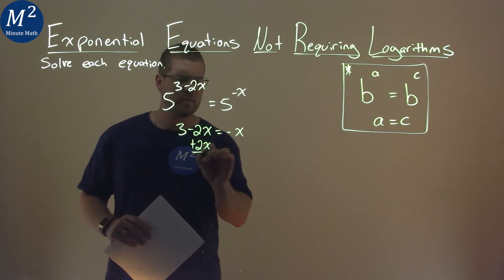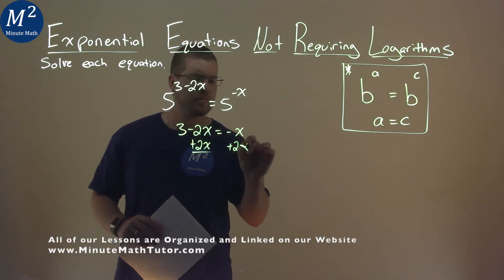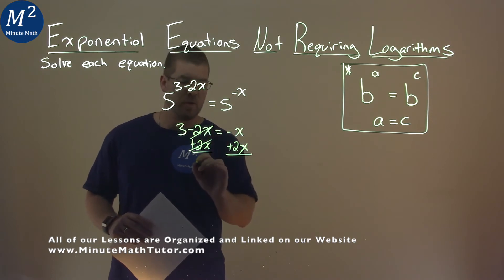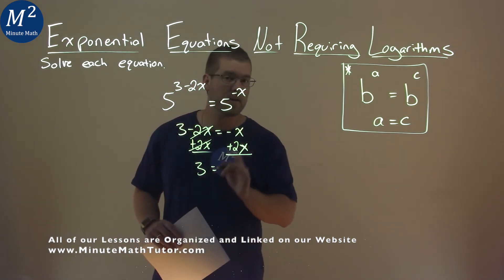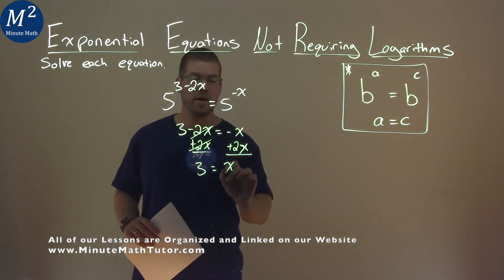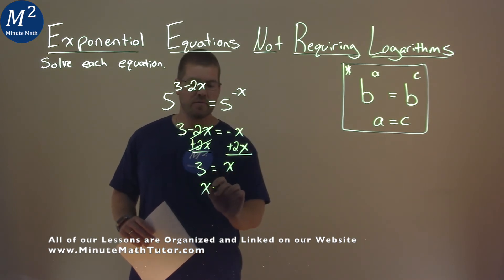Add 2x to both sides. I can write an x. 2x is cancelled, and we have a 3 on the left, and negative x plus 2x is just 1x.